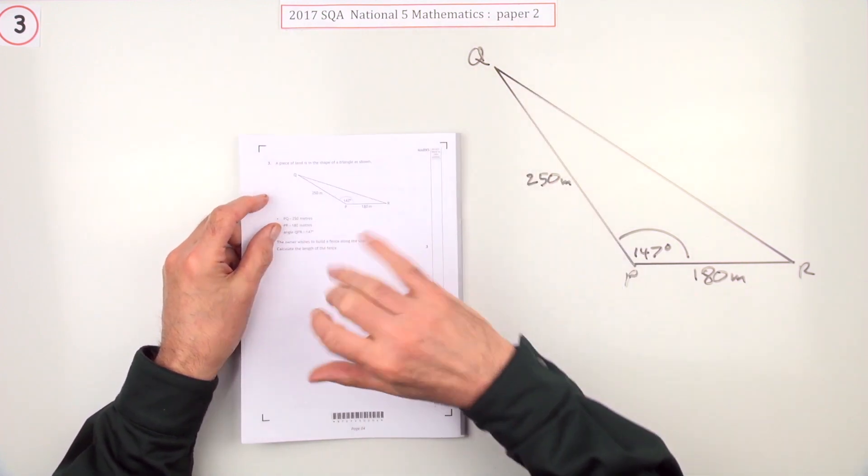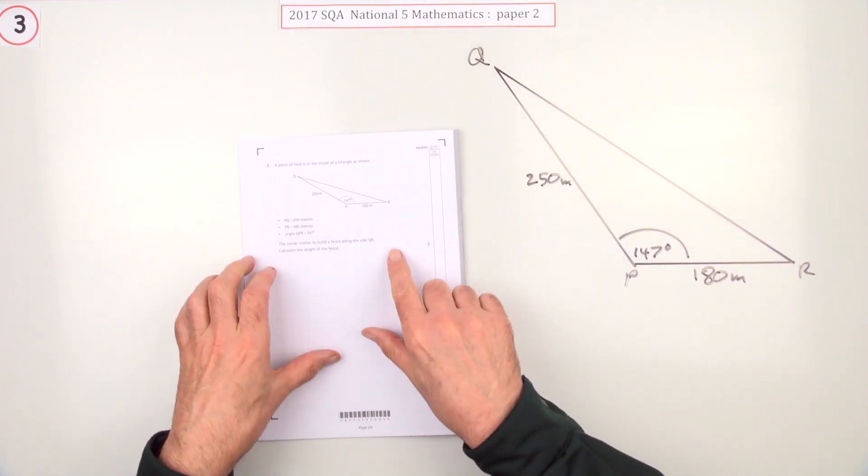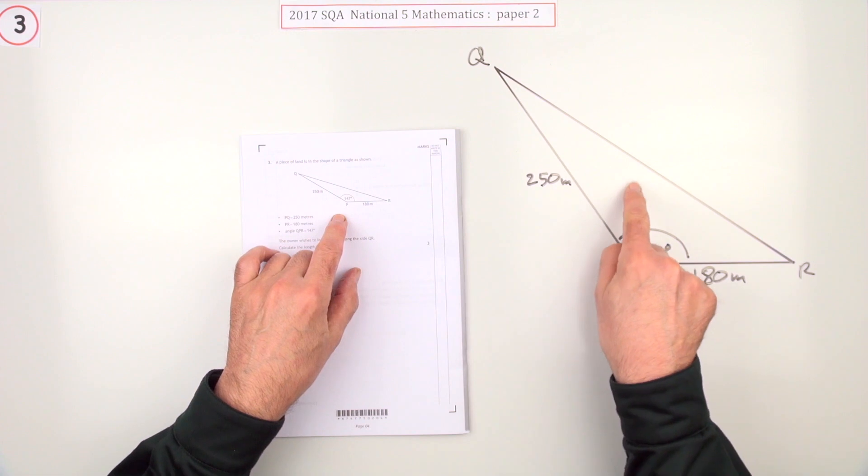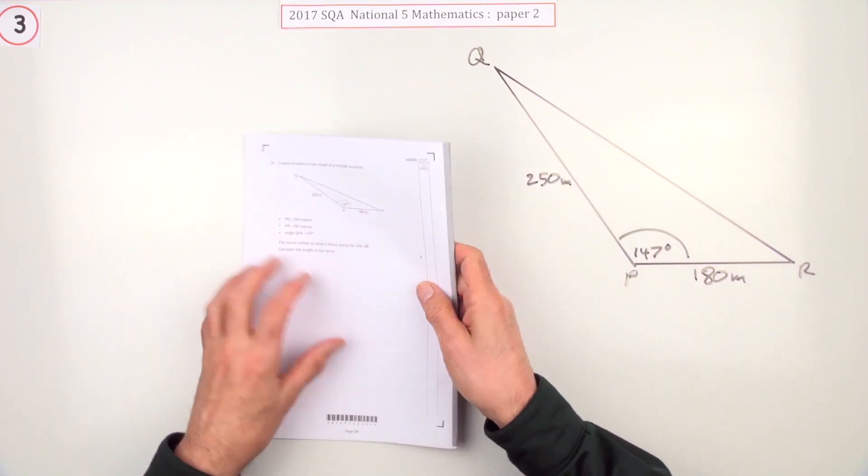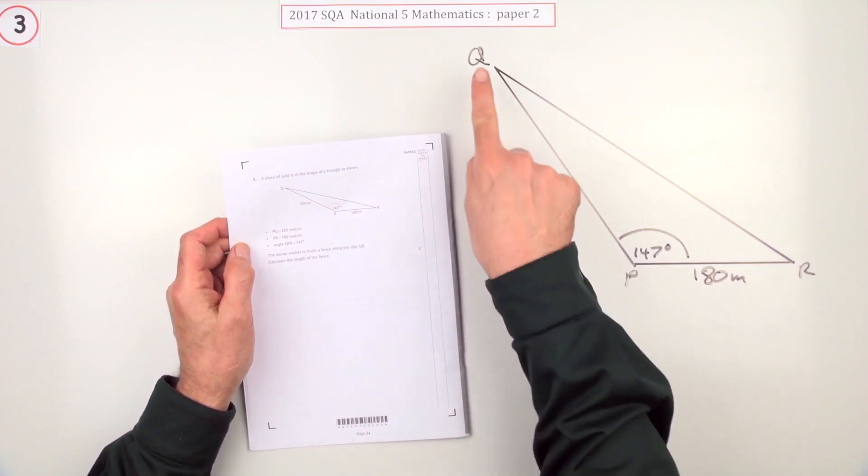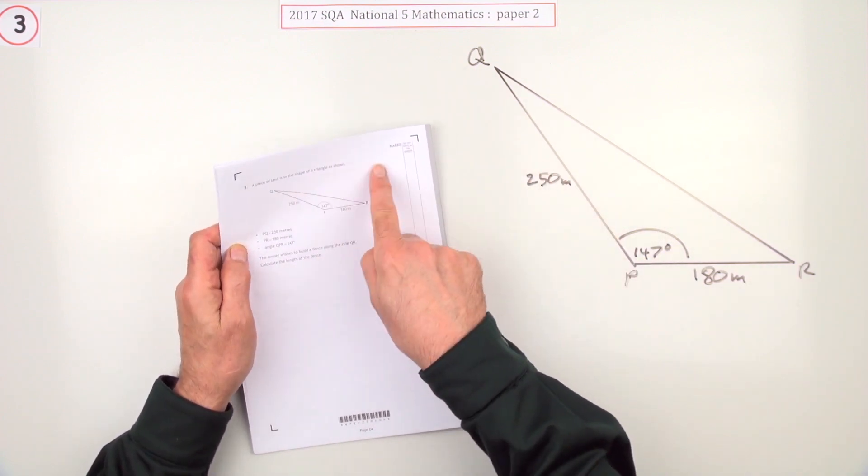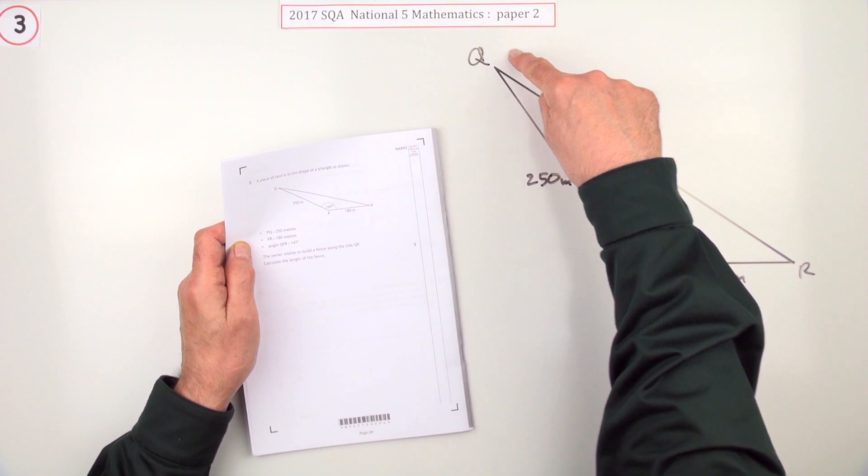So number three from paper two of the 2017 National Five, it's just three marks. There's one of these triangles again, it's not a right angle triangle so we're in one of these sine cosine rule ones. A piece of land in the shape of that triangle, one wishes to build a fence alongside QR.